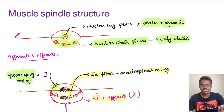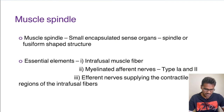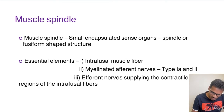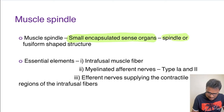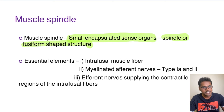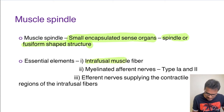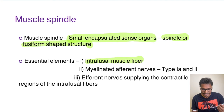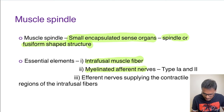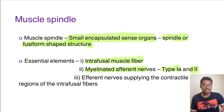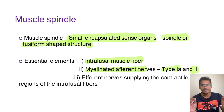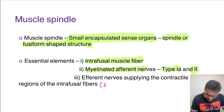So this is the structure of a muscle spindle. We have to remember the afferent which is 1A and the efferent which is the gamma fibers. The muscle spindle is a small encapsulated, spindle-shaped or fusiform-shaped sense organ. Its essential elements include intrafusal muscle fibers, myelinated afferent nerve fibers of type 1A and type 2, and the gamma efferent nerve which supplies only the contractile ends of the intrafusal fiber.